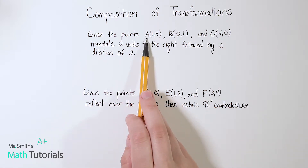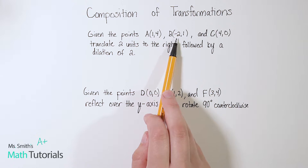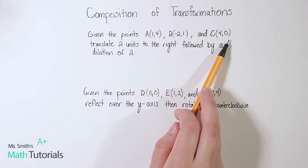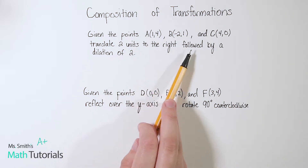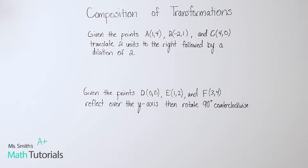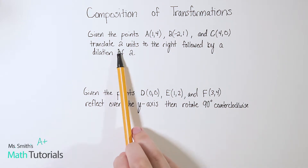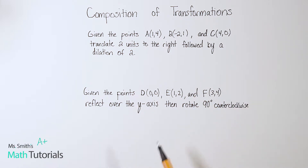Given the points A, which falls at (1, 4), B, that falls at (-2, 1), and C, which falls at (4, 0): translate two units to the right, followed by a dilation of 2. So we're not only doing a translation, we're also going to do a dilation. It's very specific that it wants us to do the translation first, then the dilation, and it does make a difference.